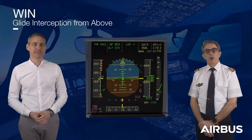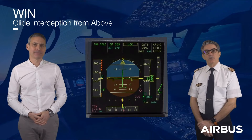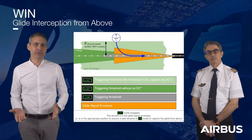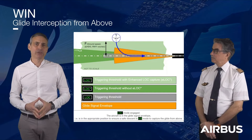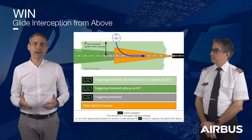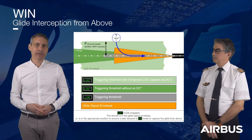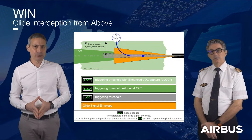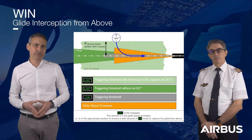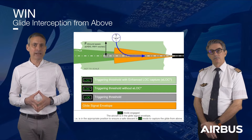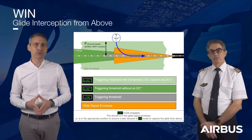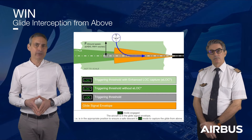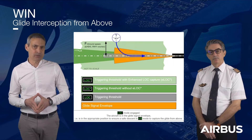Pierre, why do I have to wait until the LOC mode is engaged before I can proceed to the glide interception? On Airbus aircraft, the LOC STAR mode may engage before the standard reliable localizer array, in order to reduce the exposure to localizer overshoot during the interception. So to ensure that the aircraft is well established on the final approach before descending to intercept the glide from above, the pilot flying must wait until the LOC mode is engaged.